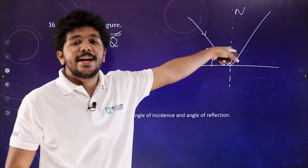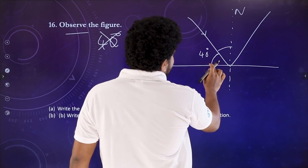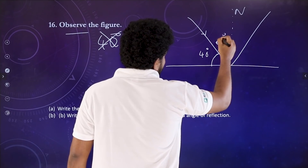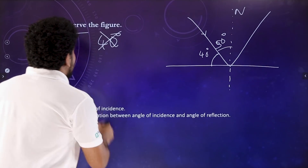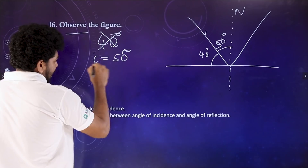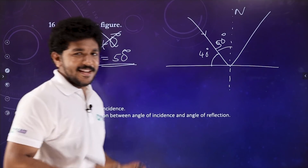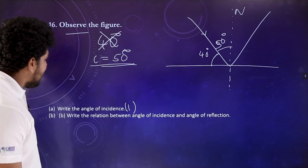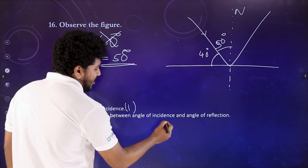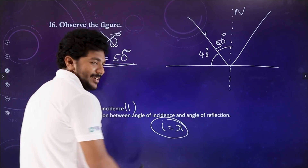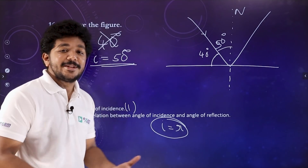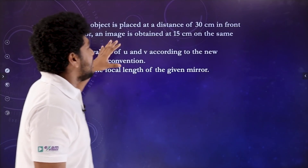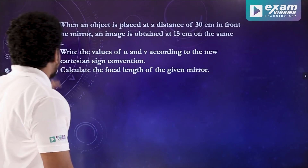What is this angle? The first angle is 90 degrees, this is 40 degrees, then there is 50 degrees. 50 plus 40 is 90. In this case, the answer is 50 degrees. There is a careless mistake — you can mark it on the other side. Write the relation between angle of incidence: i is equal to r. It is a simple question.